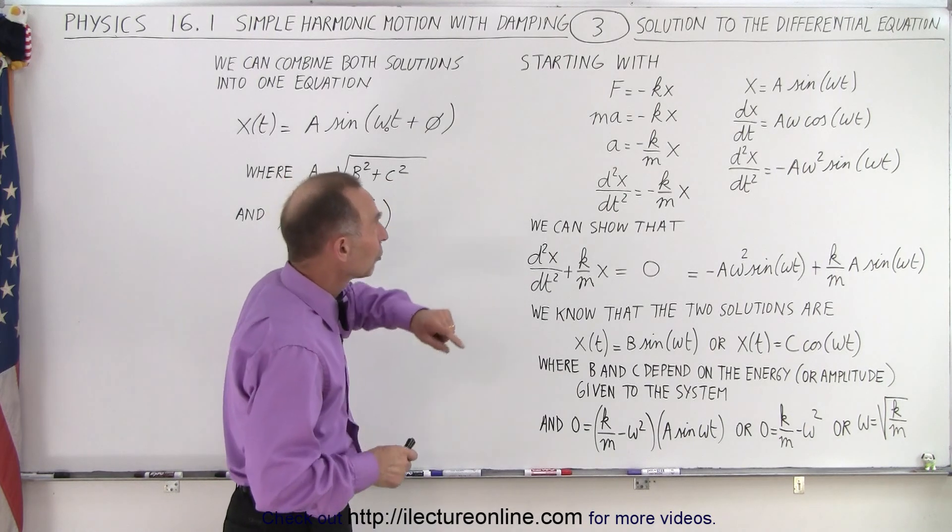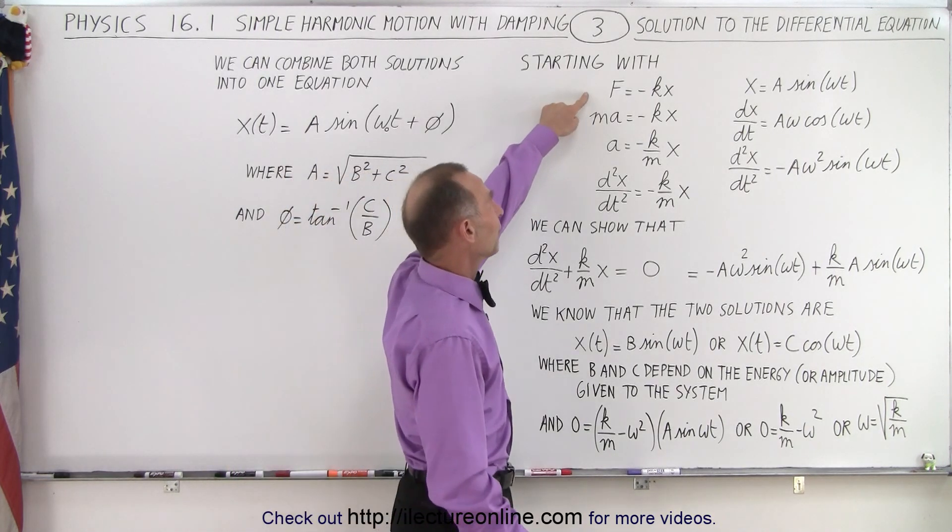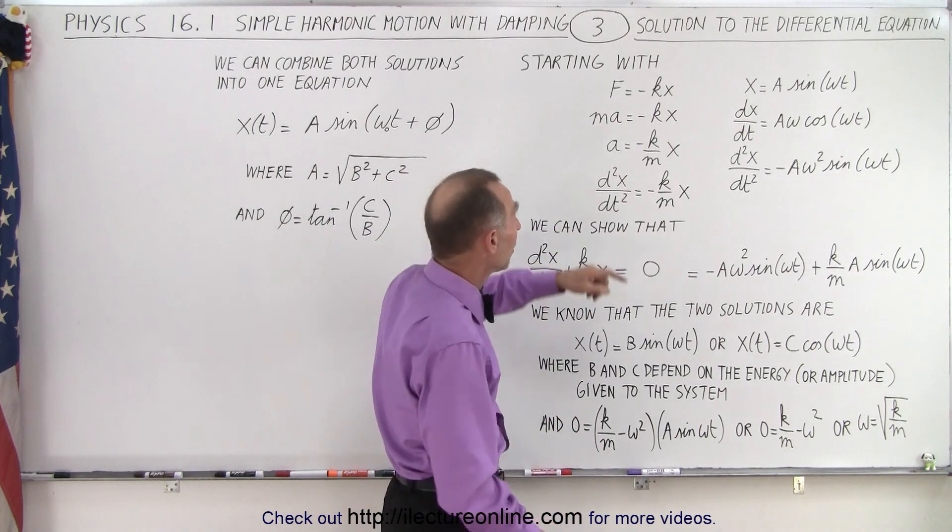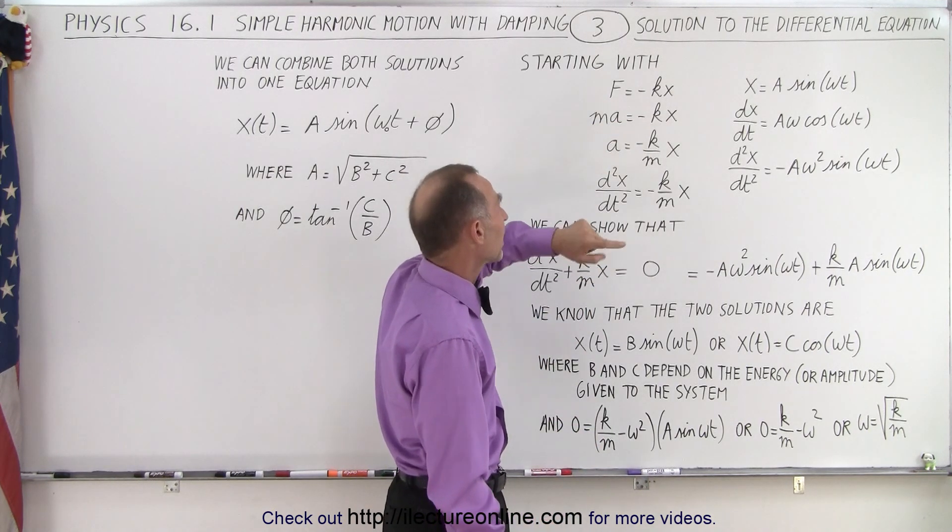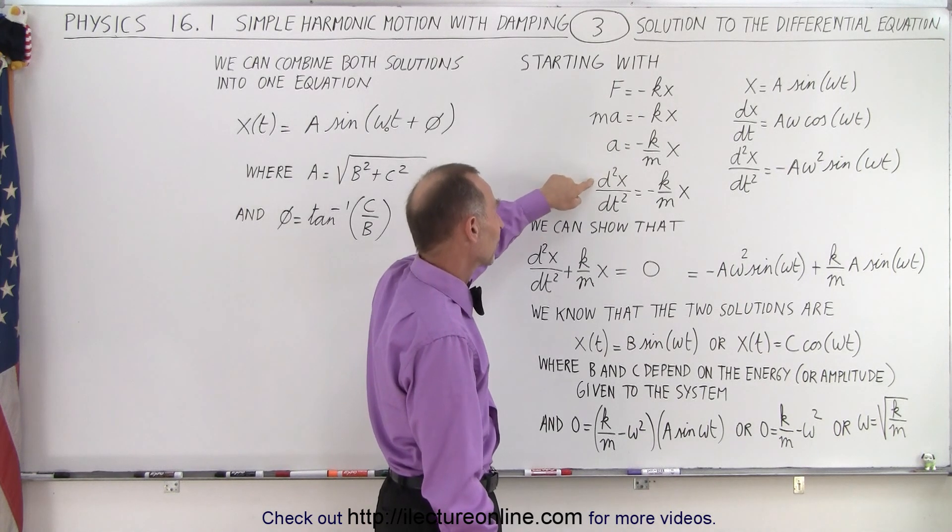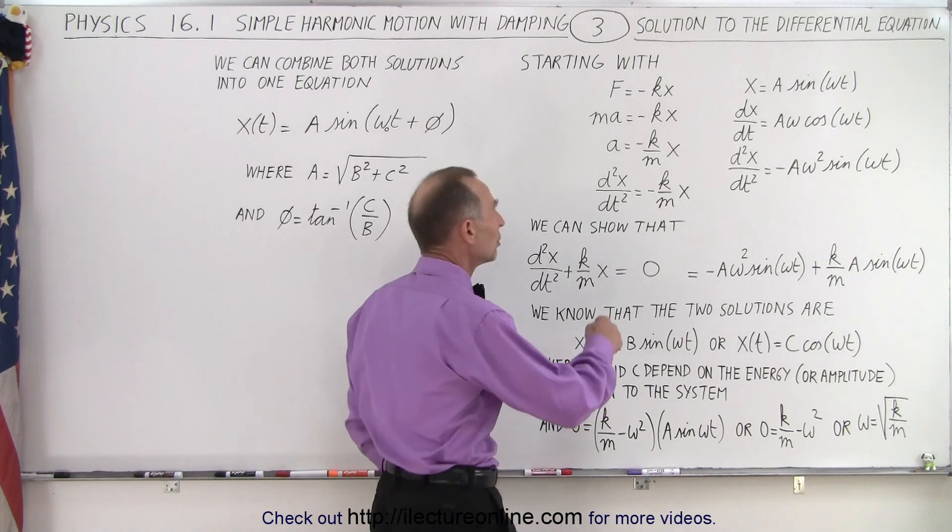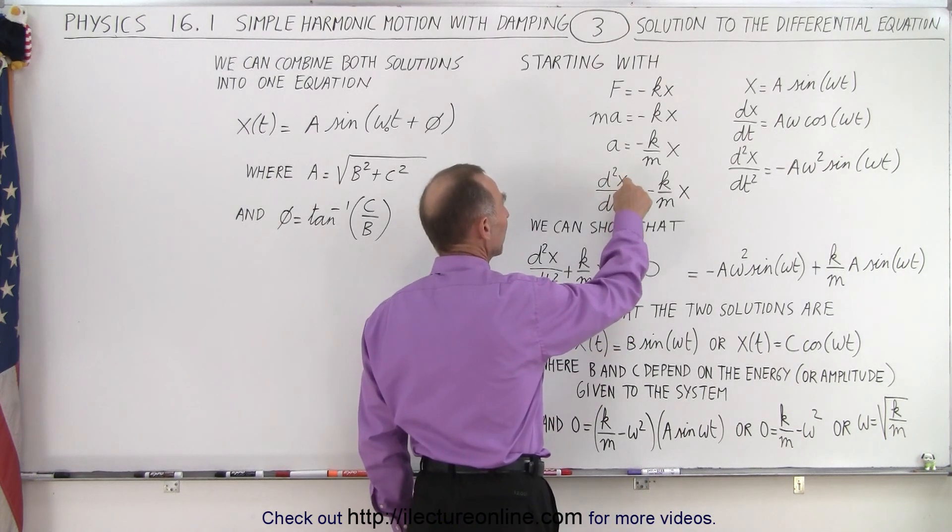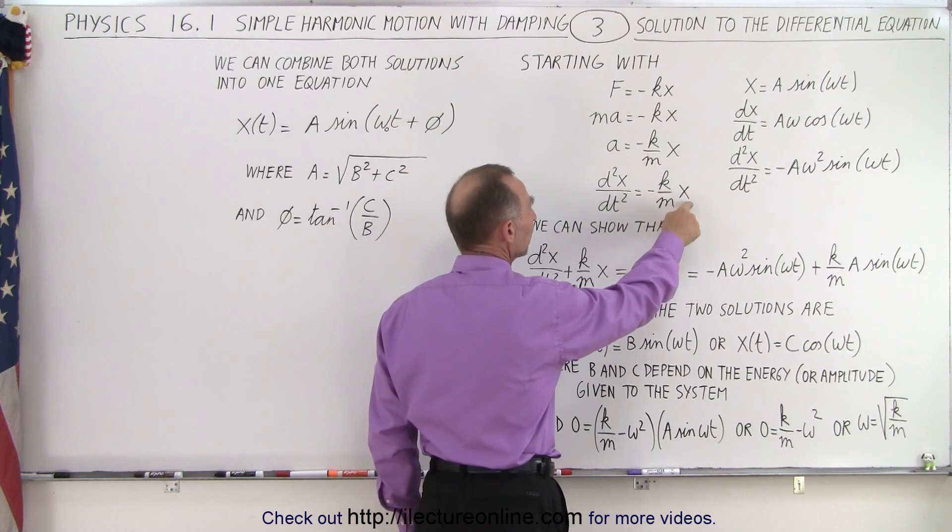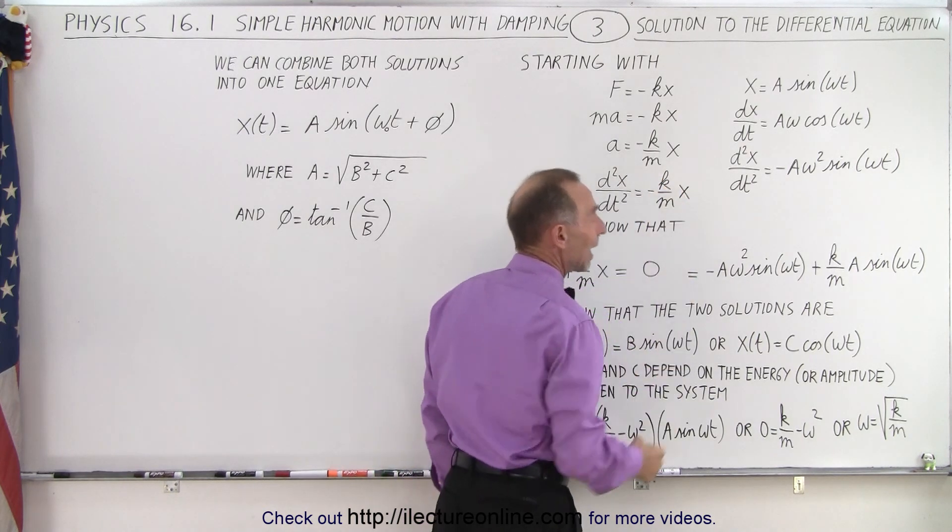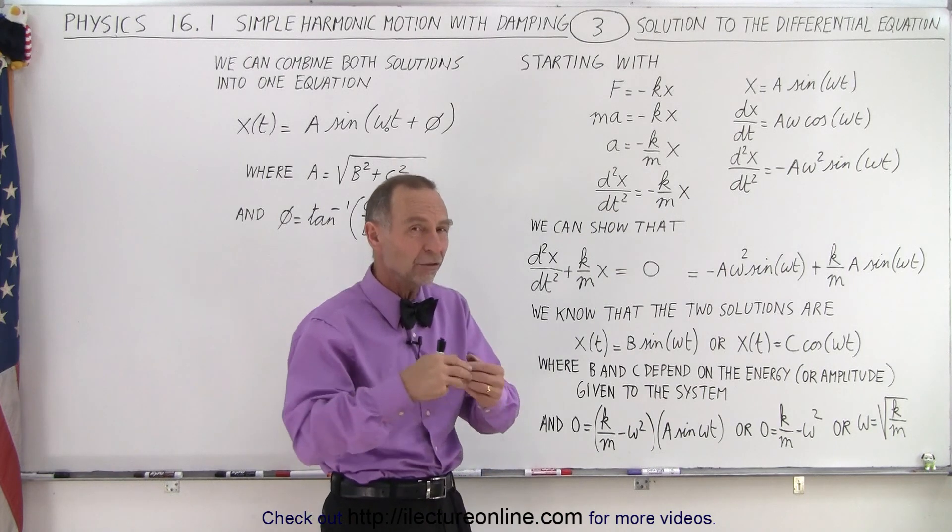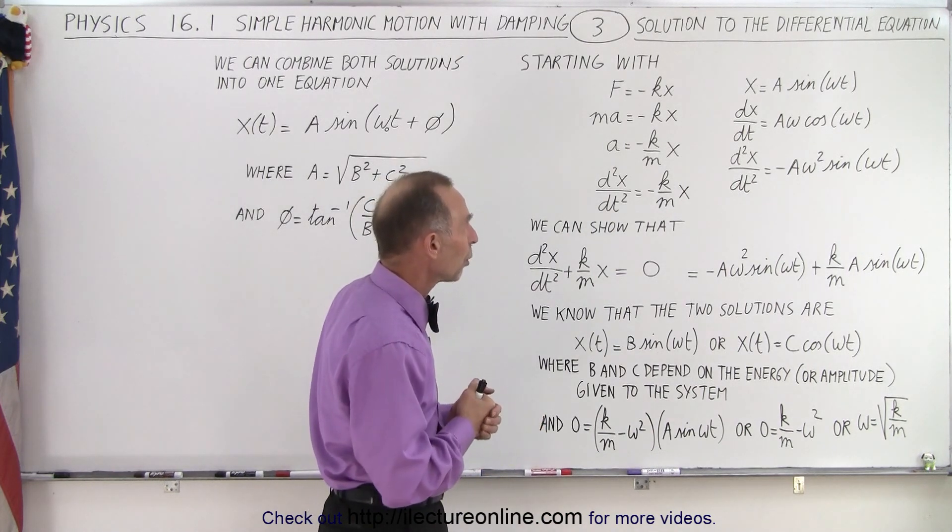Going back to the initial premise that F equals ma, or F equals minus kx in the case of the spring, we can say that ma equals minus kx. Solve this for a, and then we realize that a is the same as the second derivative of position with respect to time. So here we know that the second derivative with respect to time of x is equal to minus k over m times x, k being the spring constant, m being the mass of the oscillating object, x being the distance away from the equilibrium point.